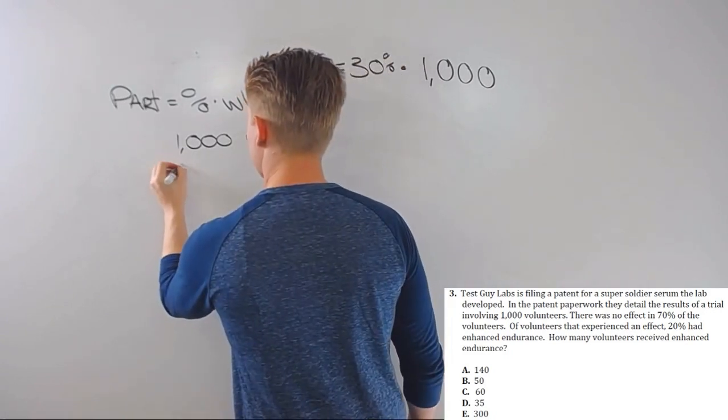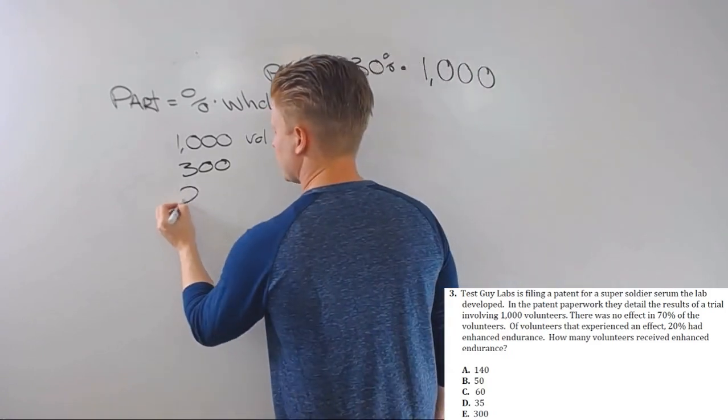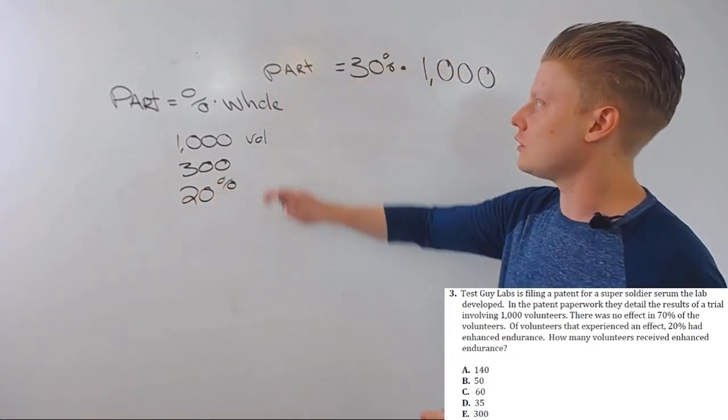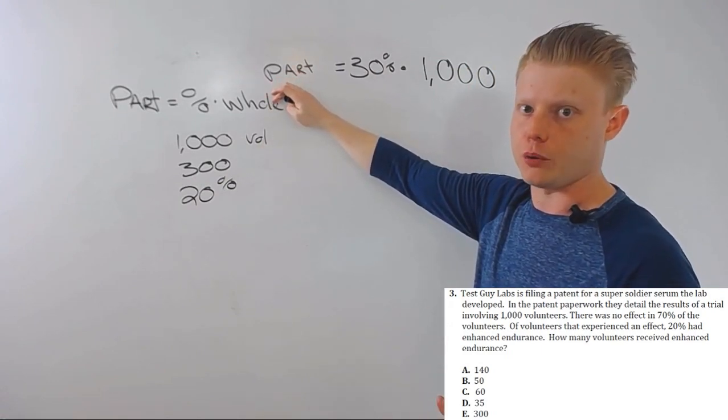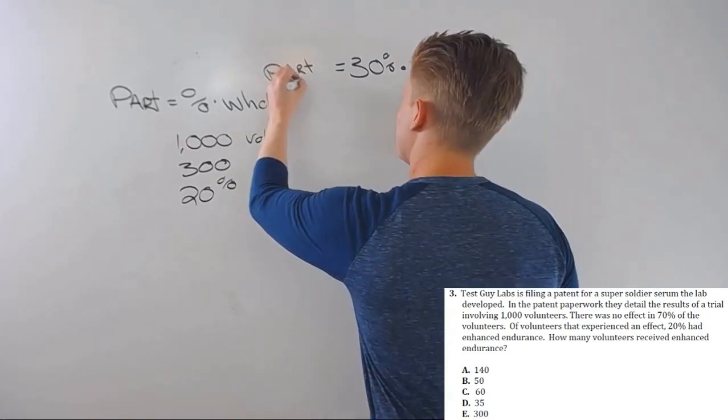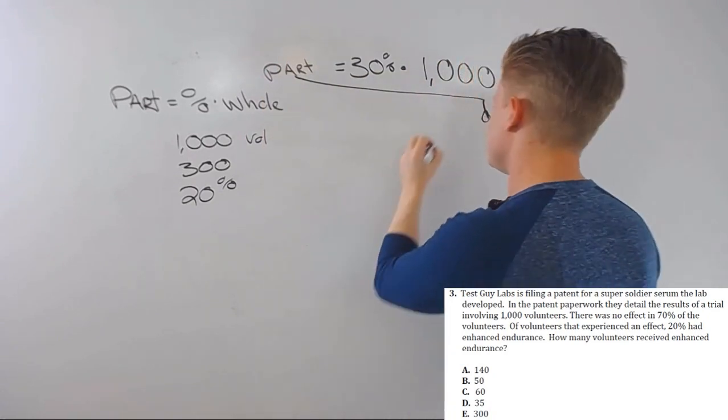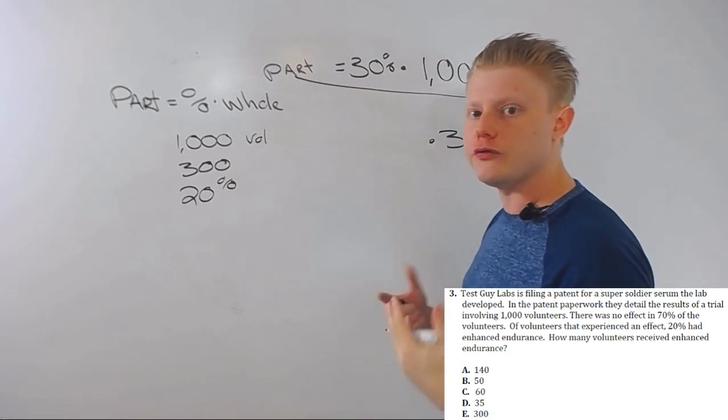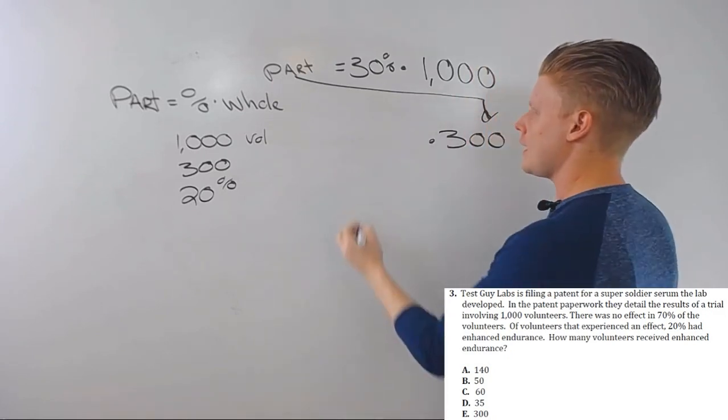So we know 300 were affected. Now, 20% of those got endurance. Here's what generally happens: whatever we solve for here becomes either the next whole or the next part. A lot of times it'll flip, so what was the part here now becomes our whole, because 300 is what happened—what our number is—before that 20% is applied. So 300 was part, now it's whole.